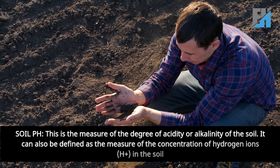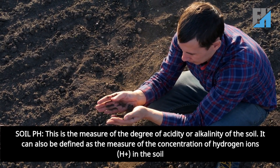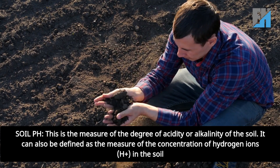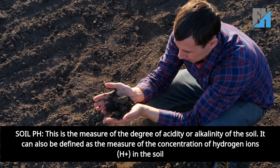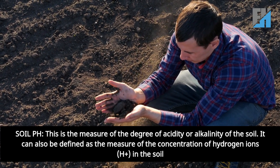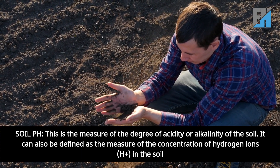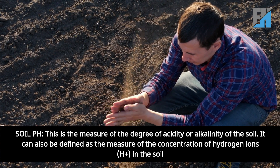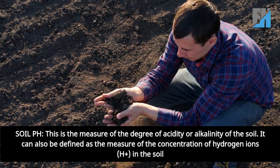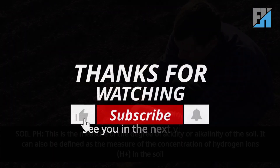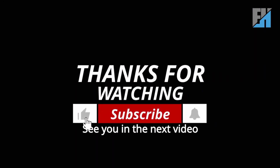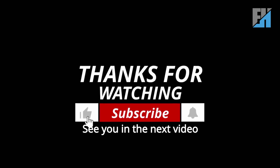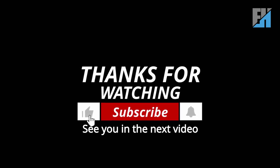Soil pH is the measure of the degree of acidity or alkalinity of the soil. It can also be defined as the measure of the concentration of hydrogen ions (H+) in the soil. Thanks for watching; see you in the next video.